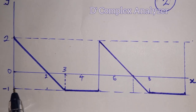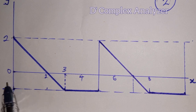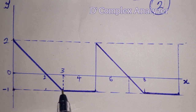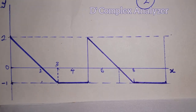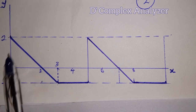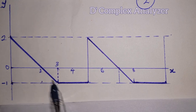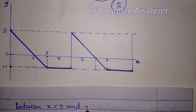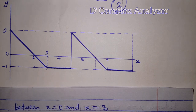Now between x equal to 0, the coordinate of this point is 0 comma minus 1, so the y value here is minus 1 and the x value is 0. So between 0 and 3, we cannot just say what y is — we have to determine the equation of this line. Unlike the first question where we could see what the y value is directly, this one is different. So let us determine the equation of this line between x equal to 0 and x equal to 3.